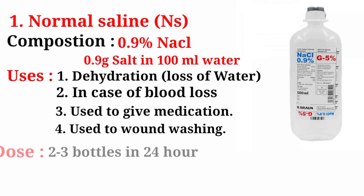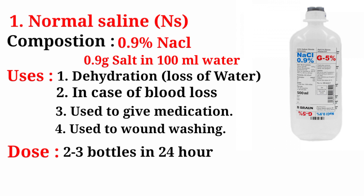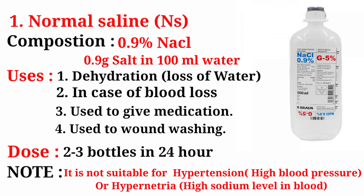Number four, used for wound washing. Dose: two to three liters in 24 hours. Normal saline is not suitable for hypertension patients (high blood pressure) or hypernatremia (high sodium level in blood), so it is not preferred in those conditions.